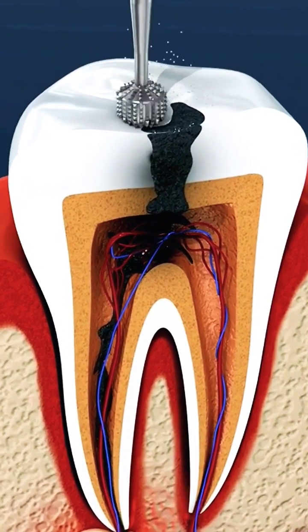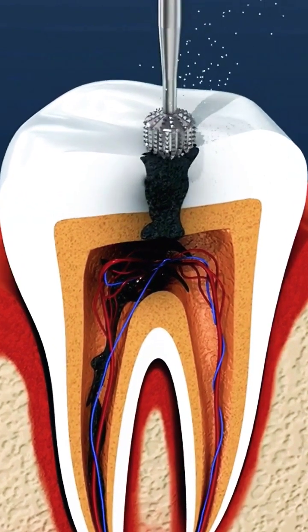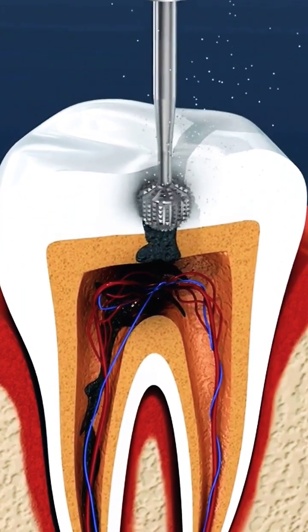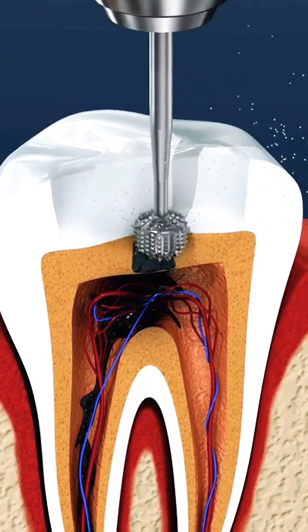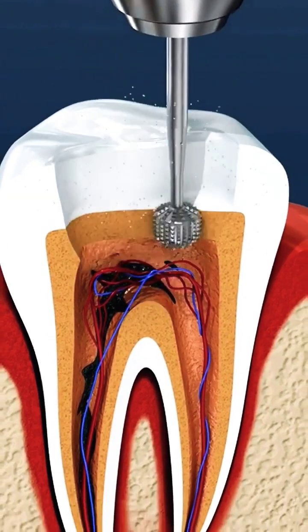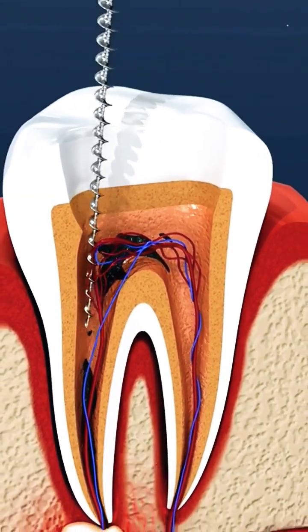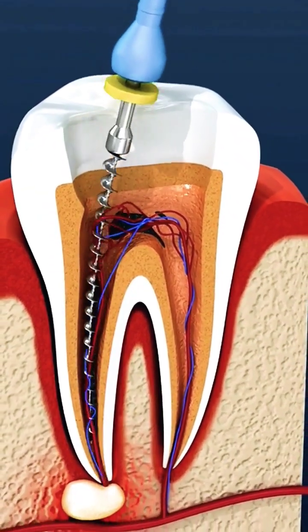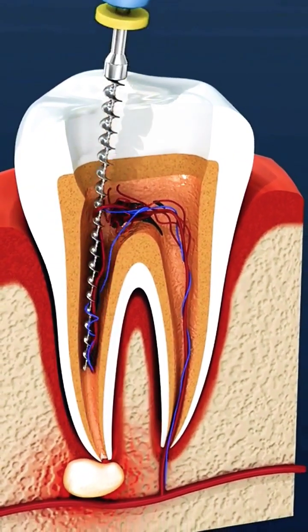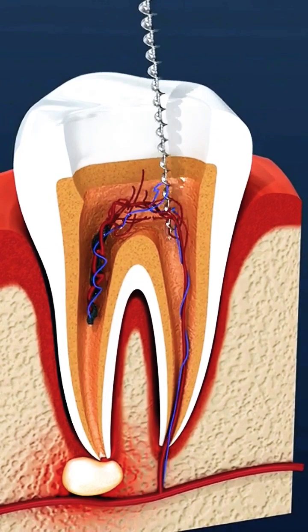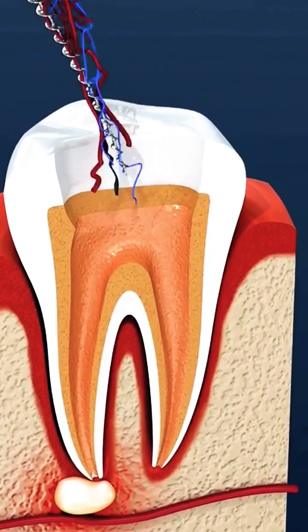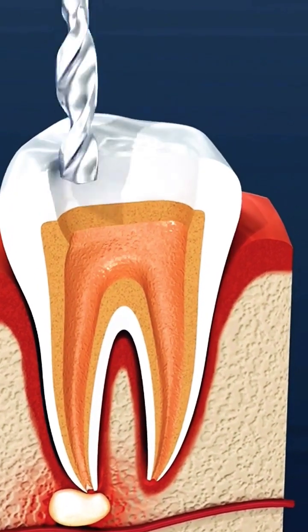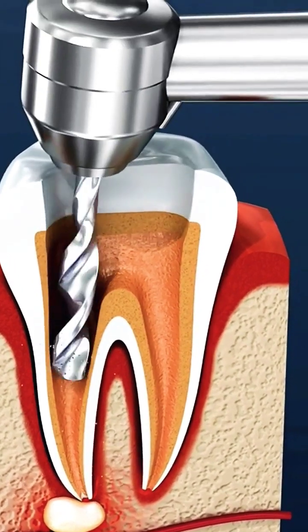What happens during a traditional root canal procedure? The dentist or endodontist removes the tooth pulp to treat the infection inside the tooth. Before beginning treatment, x-rays are taken, the patient is given local anesthetic, and a dental dam is placed. To gain access to the pulp, a hole in the crown of the tooth is created.